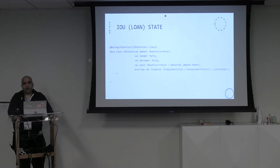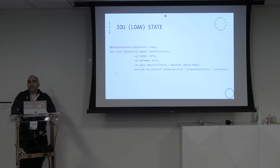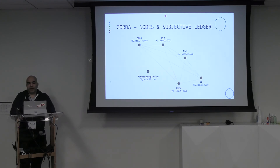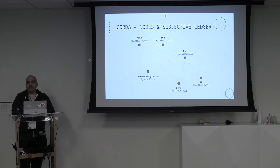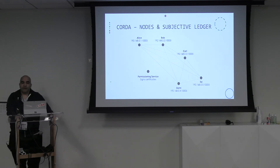Here's an example of a loan state — this is an IOU state. It has an amount, a lender, a borrower, and the amount that's been paid. I can track that and issue it on a ledger. If I want to borrow money from somebody, let's say I'm Bob — I put it on the ledger and push it off to Alice. If she digitally signs that, then she's agreed to a loan and issued me some capital. Offline she can send me the money, and that potentially becomes legally binding.